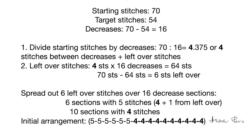Here is the summary of the calculations. The starting stitches are 70 and target stitches are 54. 70 minus 54 equals 16 decreases. We divide 70 starting stitches by 16 and get 4.375 stitches, which we round down to 4 stitches between decreases plus leftover stitches. To calculate the leftover stitches we multiply 4 stitches by 16 decreases to get 64, so 70 minus 64 equals 6 leftover stitches. Now we spread out 6 leftover stitches over 16 decrease sections.